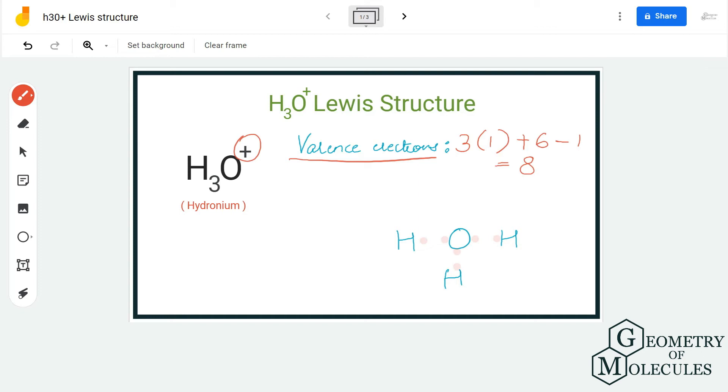Now if you look at this structure, each hydrogen atom has two valence electrons, which means it has a complete outer shell. Hydrogen atoms just need two valence electrons in their outer shell, so all hydrogen atoms have complete outer shells. Now we are only left with two valence electrons.